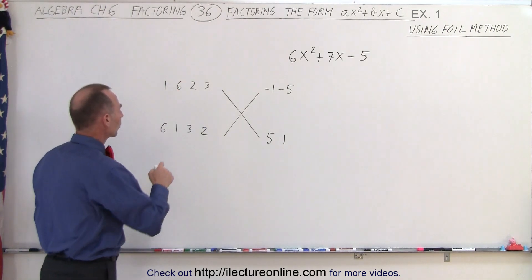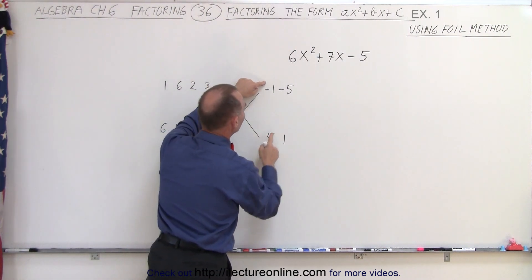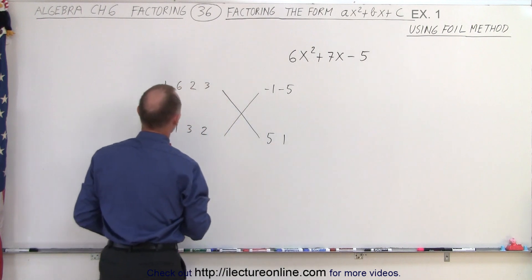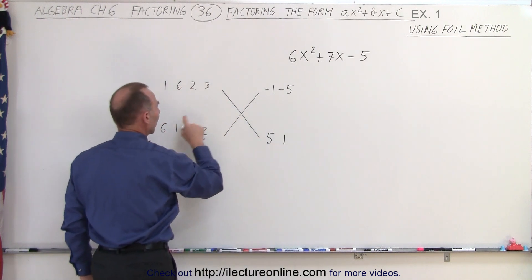Now, how does this work? Well, we're going to take the first set of numbers here and multiply it times the first set of numbers to see if we get the middle term. In other words, 1 times 5 plus 6 times negative 1.